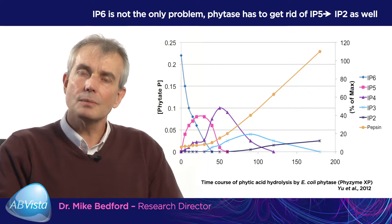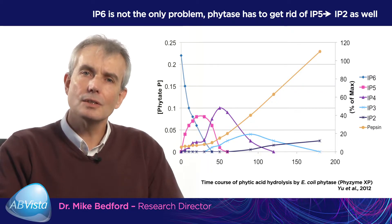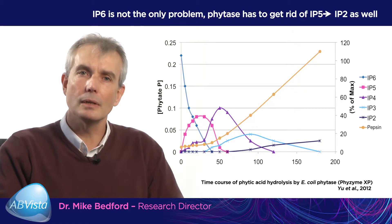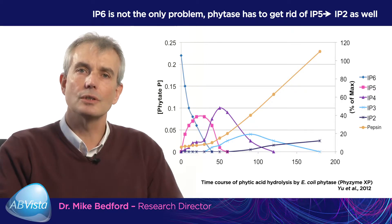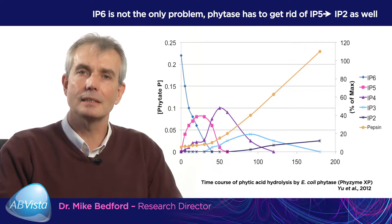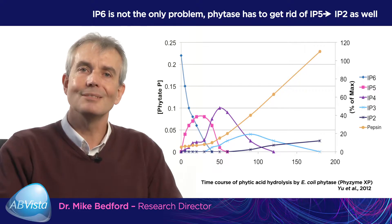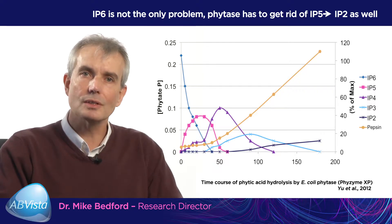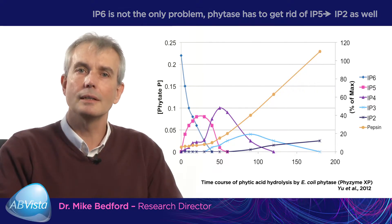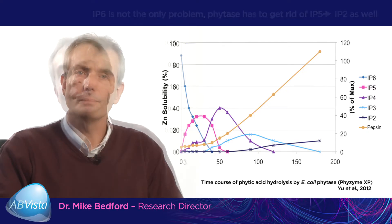So this is the first piece of in vitro work that tends to suggest that we should not just think of phytic acid or IP6 as being the only anti-nutrient when we talk about phytase and phytic acid. In fact we've got to start thinking about IP5, IP4 and IP3.